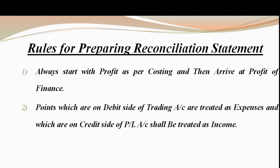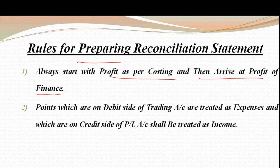There are some basic rules for preparing the reconciliation statement. The first rule is: always start with the profit as per costing and then arrive at the profit as per finance. We always start from the costing profit and our destination is the finance profit।